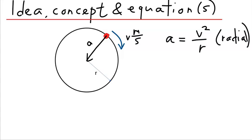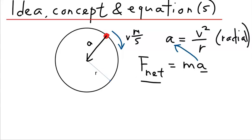We also know from Newton's second law that if there is an acceleration, there must be a net force, and they are related by f_net equals ma. Since there is this centripetal acceleration, there must be a net force that is causing that acceleration. That net force is called the centripetal force.